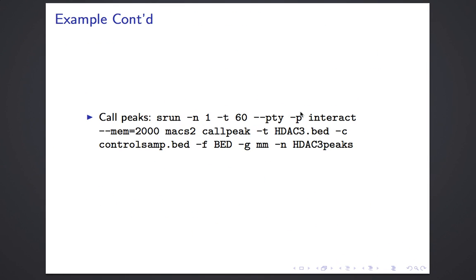Calling peaks means that when you have a treatment group and use tiling arrays to hybridize all the reads, at the transcription binding site most reads stack on top of each other and the signal is very high, then drops as you move away. In the control file, reads are scattered everywhere and represent just noise. By comparing these two at each position, you can identify the transcription factor binding sites.